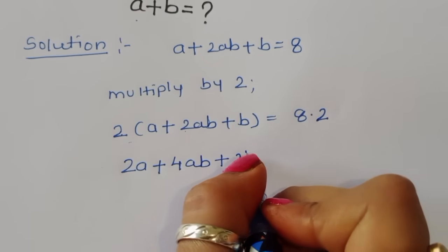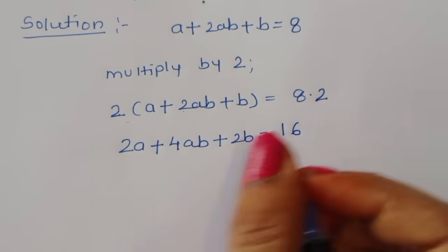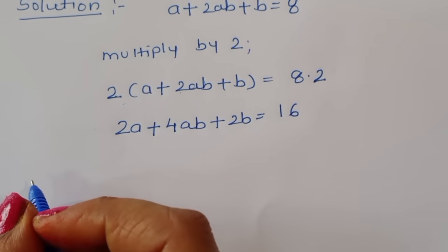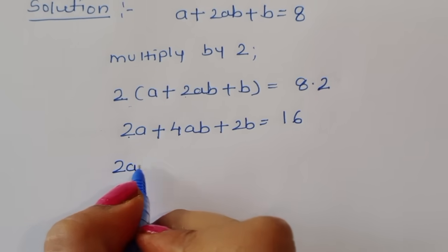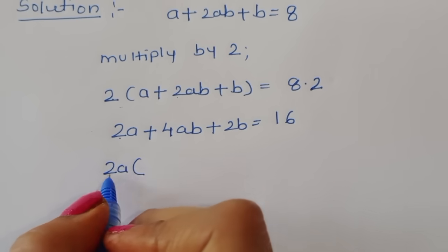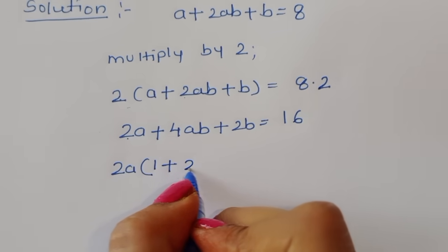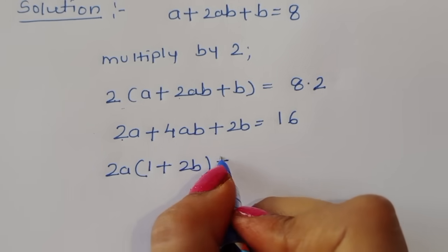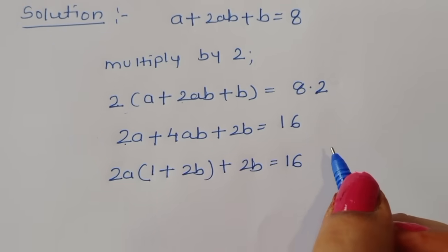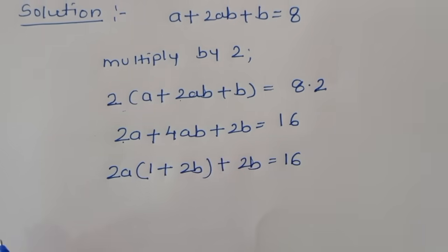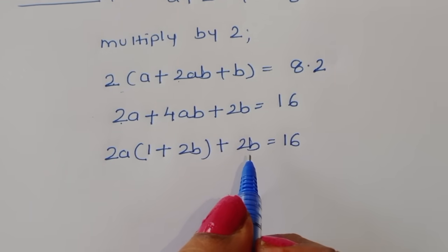Now we take 2a common: 2a(1 + 2b) + 2b = 16.